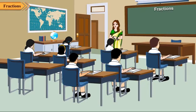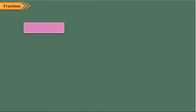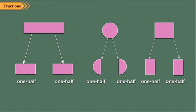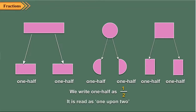Children, observe the shapes shown here. Each shape has been divided into two equal parts. Each part is one half of the whole. If you add these parts again, you get a whole. We write one half as one upon two. Two halves together make a whole.